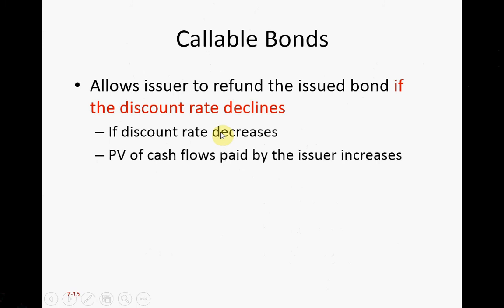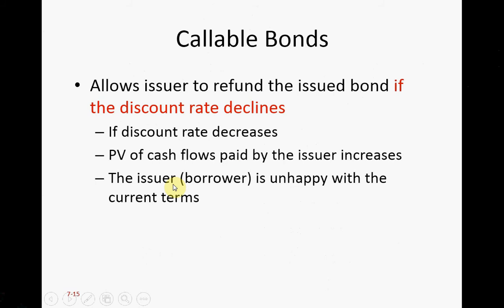As a result of a lower interest rate, if you still have the bonds floating around and still pay the same cash flows — same $40 coupons each period and the same $1,000 twenty years from now — then the present value of those cash flows actually increases. Same coupon, same face value in the future, but just because the discount rate goes down, the present value goes up. So the issuer is unhappy with the deal because they are paying more cash in terms of today's dollar, and so they want to call back and refinance.